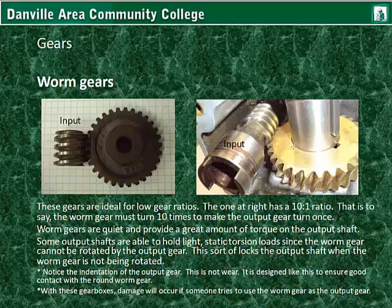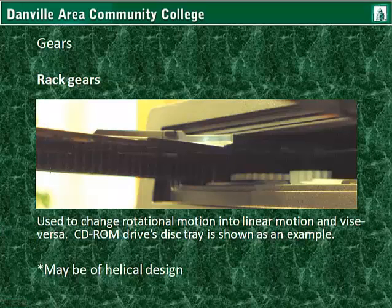With worm gearboxes, damage will occur if someone tries to use the worm gear as the output gear. Rack gears are used to change rotational motion into linear motion and vice versa — a CD-ROM drive tray is shown as an example. They may also have helical teeth.